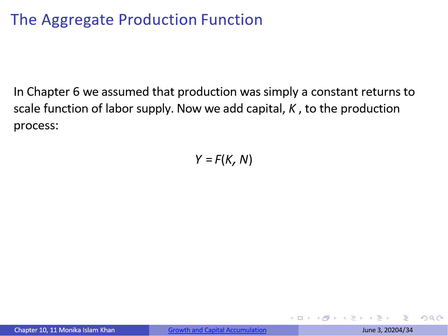In Chapter 6, we had a production function that was simply a constant returns to scale function of labour supply. That wasn't very realistic, so now we add capital K to the production process. Your output is now a function of capital K and the labour N used in production.